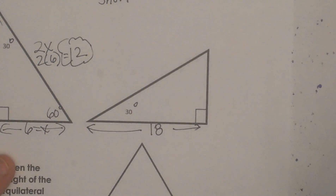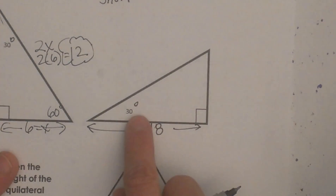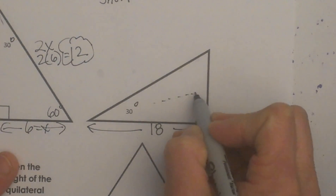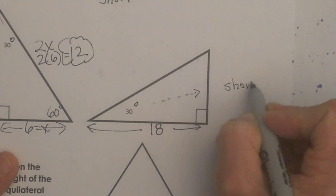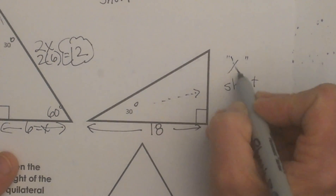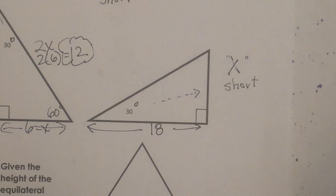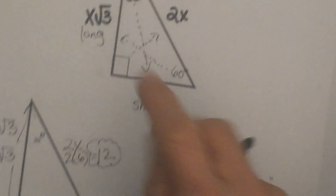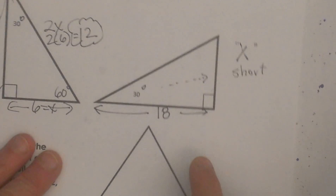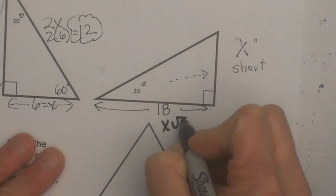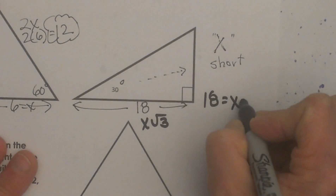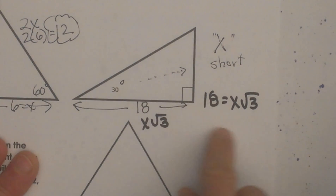Now let's look at the second problem. This triangle is turned, so you have to be very careful. Here is our 30 degree angle — opposite it is my short leg, or x. I am not given the short leg this time; I am given the long leg. The formula for the long leg is x times the square root of 3, and this long leg is 18, so I set 18 equal to x root 3.